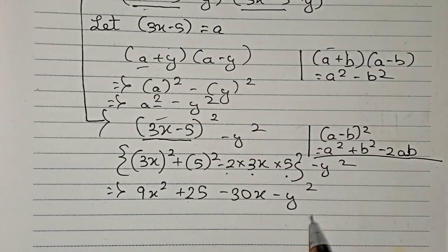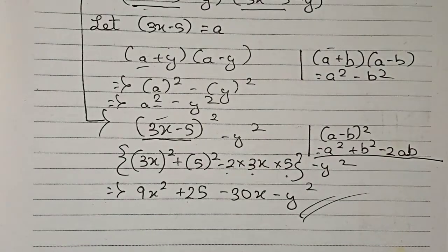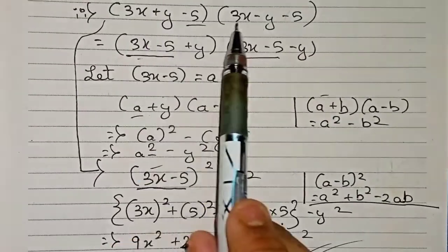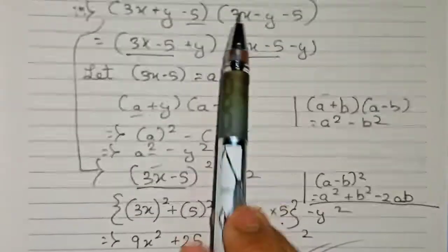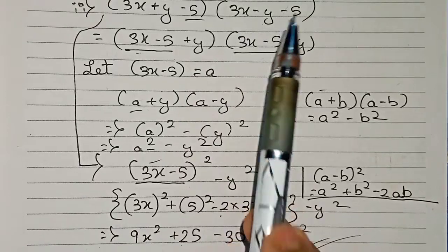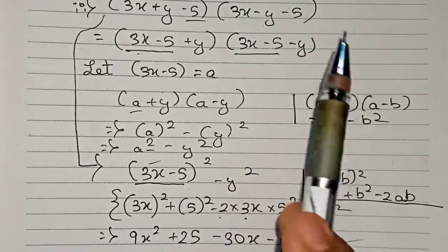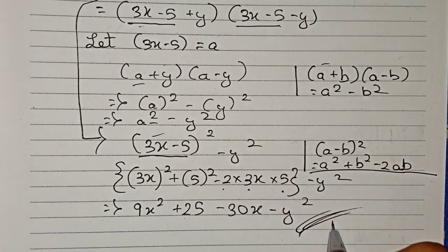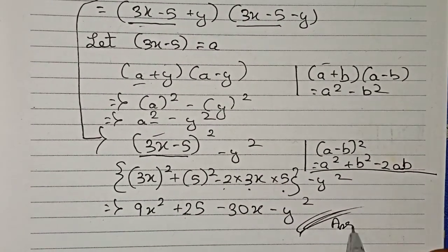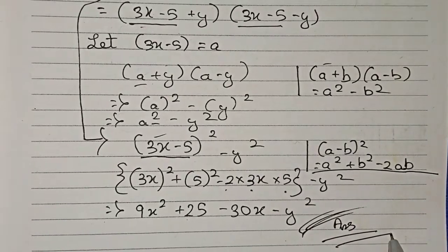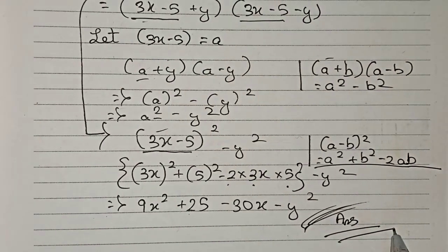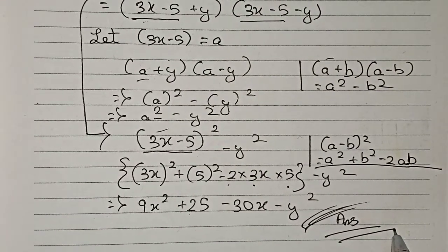So we got the expanded form of (3x plus y minus 5)(3x minus y minus 5), and therefore this is the final answer for this question. Thanks for watching this video, and please subscribe to my channel for more solutions.